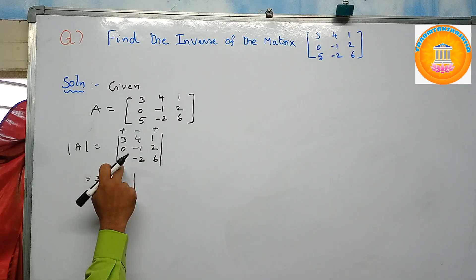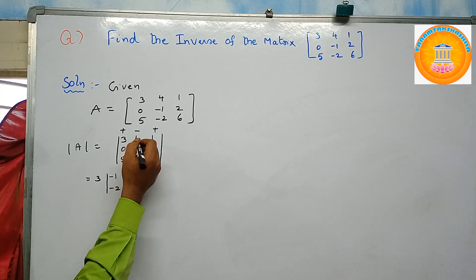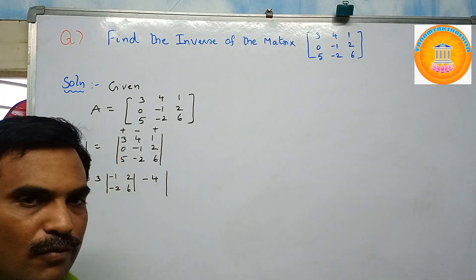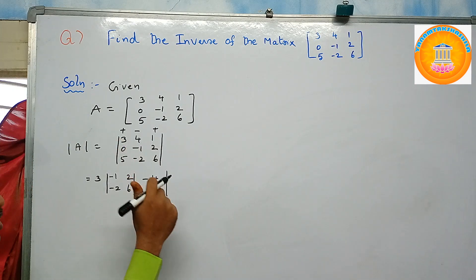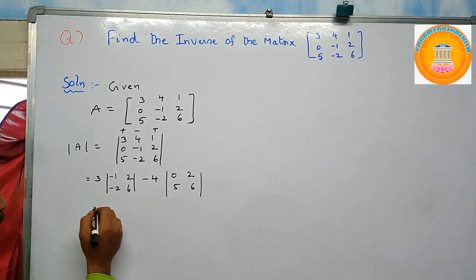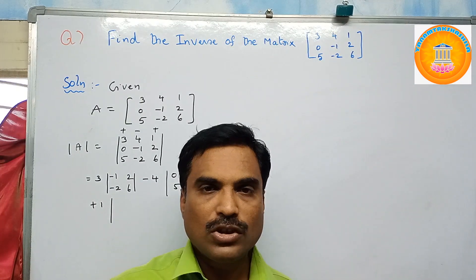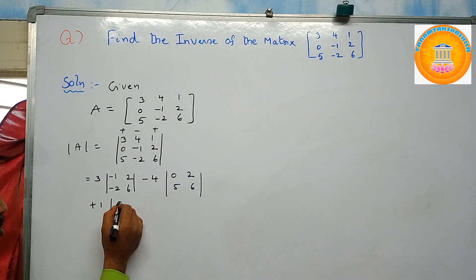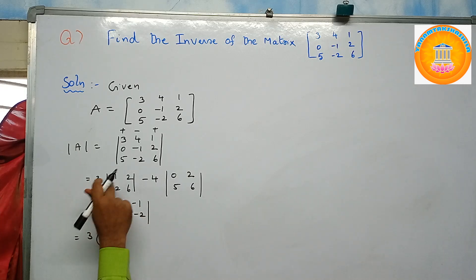Since three is in the first row and first column, we form a determinant of the remaining elements: minus one, two, minus two, six. Next is minus four — since four is in the first row and second column, we leave those elements, giving zero, two, five, six. Then place one — since one is in the first row and third column, the remaining elements are zero, minus one, five, minus two.